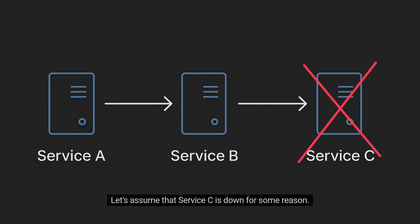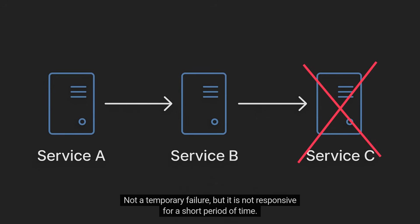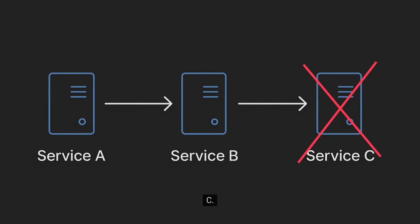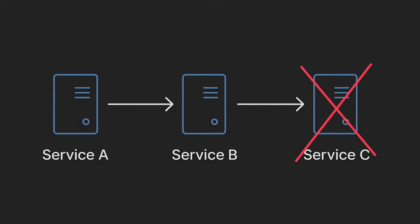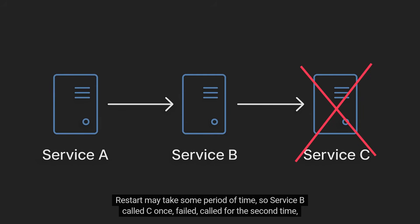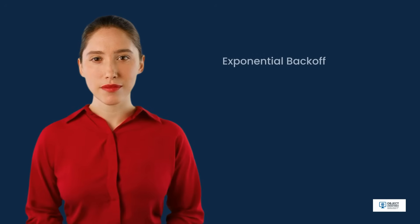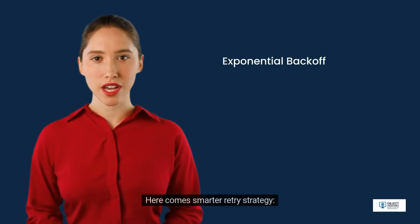Let's assume that service C is down for some reason — not a temporary failure, but it is unresponsive for a short period of time. For instance, service C is being restarted, and unfortunately, exactly at this moment, service B is calling service C. The restart may take some period of time, so service B called C once, failed, called a second time, and failed again.